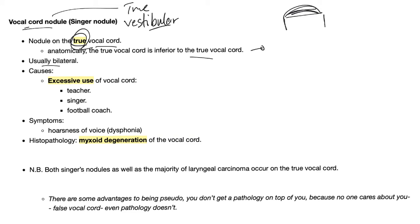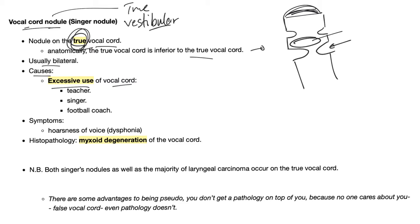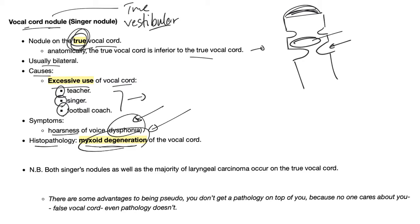On top there is the epiglottis to cover it. Then here are the false vocal folds, or vestibular folds. Then we have the true vocal cords. Between the false and the true, there is something called the vestibule or the commissure. Singer's nodule occurs on the true vocal cord. The cause is excessive use of the vocal cord, such as a teacher, singer, or football coach — someone who yells all the time. Symptoms: hoarseness of voice, also known as dysphonia.